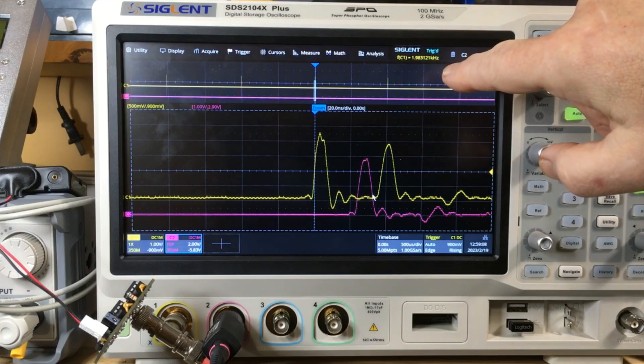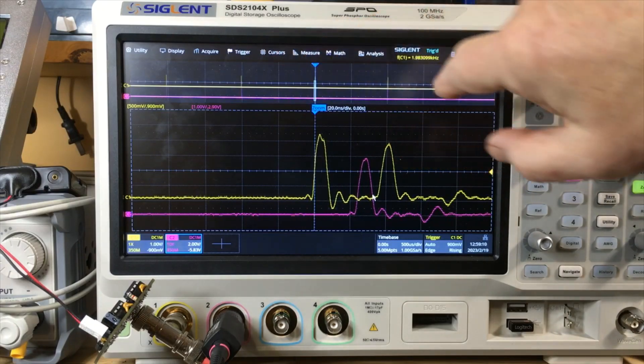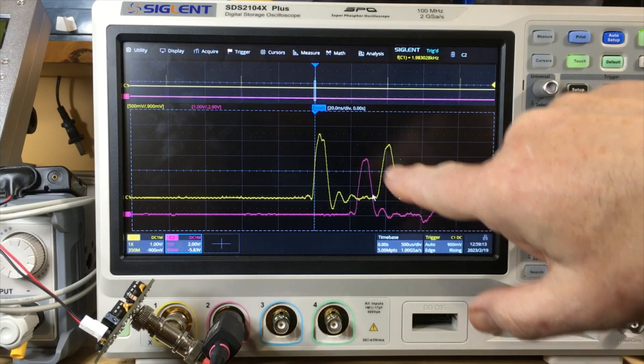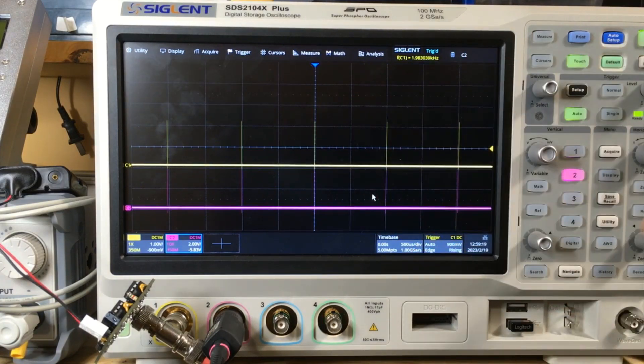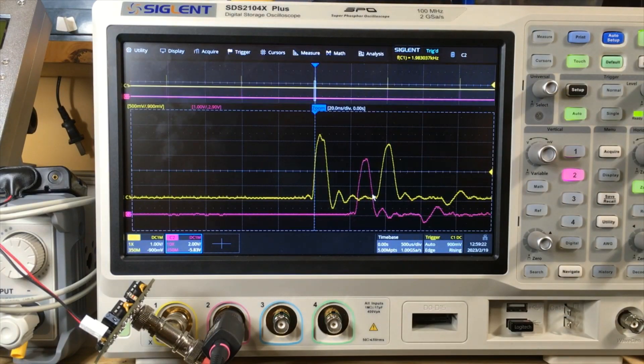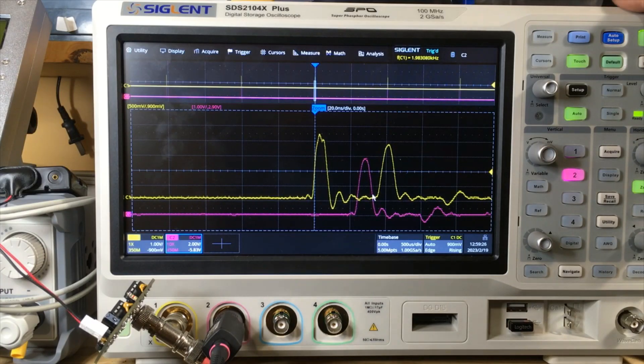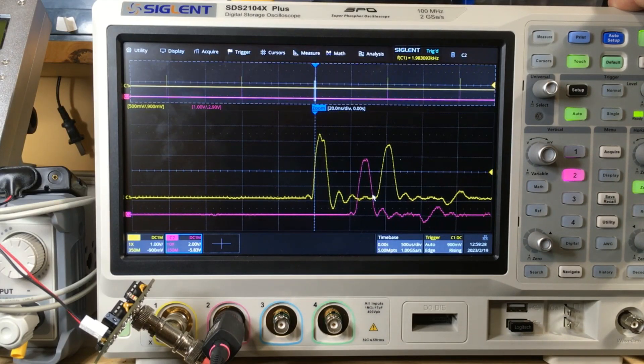Now you can still see above here your main oscilloscope trace that you had before, but now you can see in closer detail that there's a heck of a lot more information there than what you could see before. That's how it works.